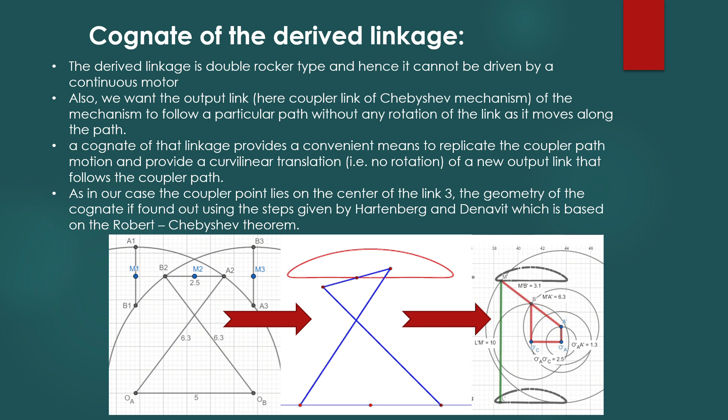But in practical application it is quite common to want the complete rotation of the input crank. Also, we want the output link to follow a particular path without any rotation of the link as it moves along the path. To achieve this we need to transform this mechanism.